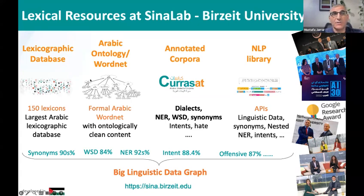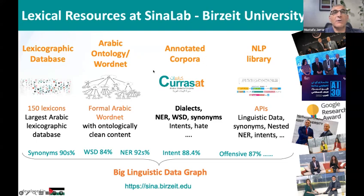Basically, we develop resources — we love to develop resources. We develop a lexicographic database, a very large one. We also digitized 150 lexicons. We develop the Arabic WordNet, or we call it Arabic Ontology. We have many annotated corpora, and we especially digitized Arabic dialects. We also have corpora annotated for named entity recognition, word sense disambiguation, hate speech, intent, and so on.